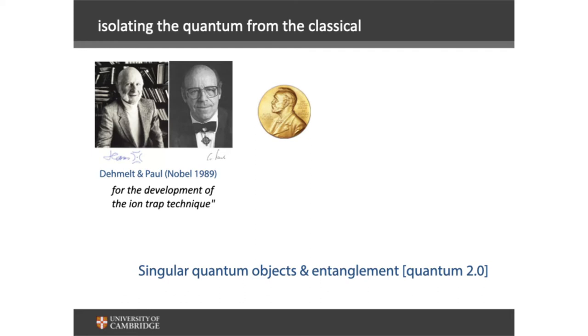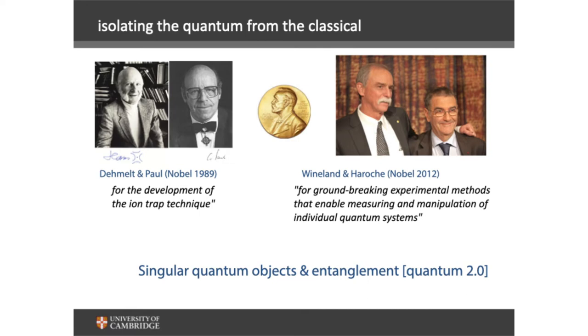A second Nobel Prize topic was on not just trapping that single ion but introducing the full quantum control tools to control individual quantum systems. Isolating the quantum object from the classical world has only been achieved quite recently — not since the 1900s. The concepts, the curiosity part, go back to 1900, but actually being able to play with these things in the lab, isolated, is only in the last 30 to 40 years. We wouldn't have been able to do this without lasers, which came in 1960.